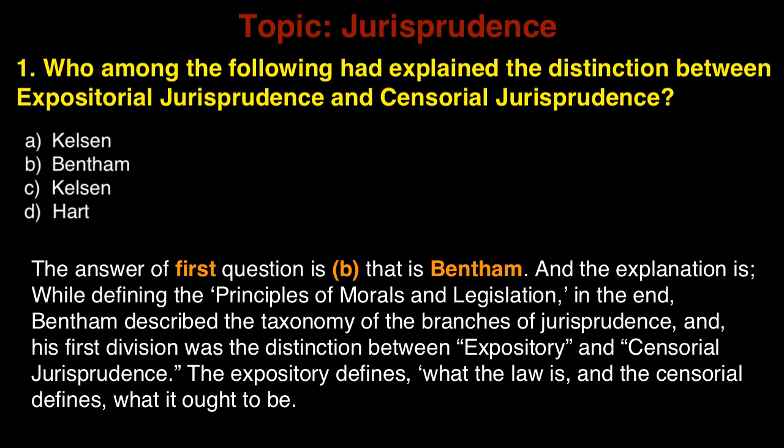The explanation is: while defining the principles of morals and legislation, Bentham described the taxonomy of the branches of jurisprudence, and his first division was the distinction between expository and censorial jurisprudence. The expository defines what the law is, and the censorial defines what it ought to be.